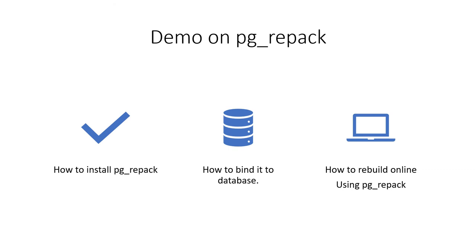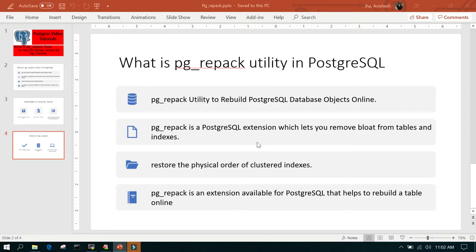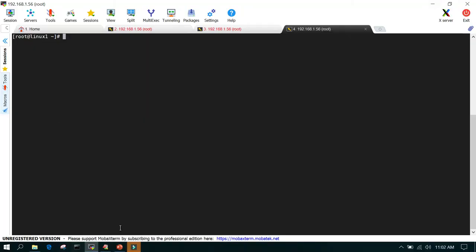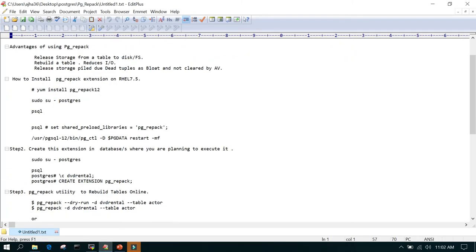Now we'll see the demo on PG Repack. There are three steps: first, we'll see how to install pg_repack, since it is not available by default and must be explicitly downloaded. Then we'll see how to bind it to a particular database. Then we will rebuild a couple of tables and see how it works. I have a Linux system where the IP address is 192.168.1.56.